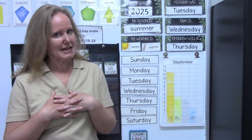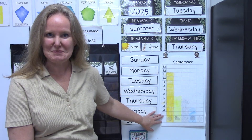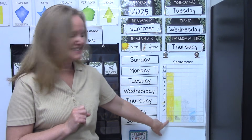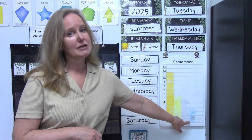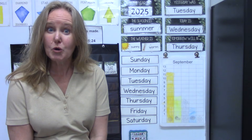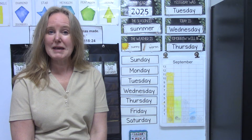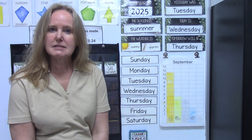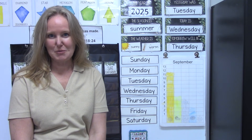In my classroom we graph the weather every morning. We take time to see if it is sunny, partially cloudy, cloudy, rainy, or snowy, and we record the weather that day. We make an observation and write it on our graph.